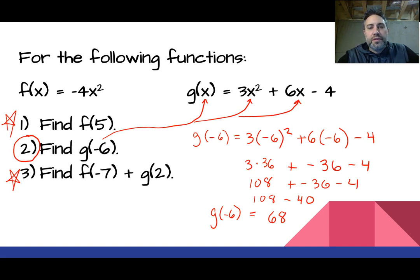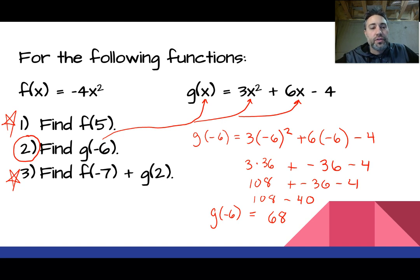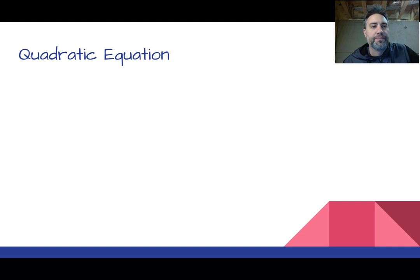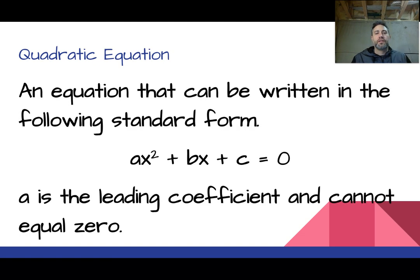I'm going to pause here. I want you to pause the video and try number one and number three — I'm most interested in number three because we're putting two functions together. Now we're going to look at a standard quadratic equation in the form AX squared plus BX plus C is equal to zero. We're going to study this function a lot.